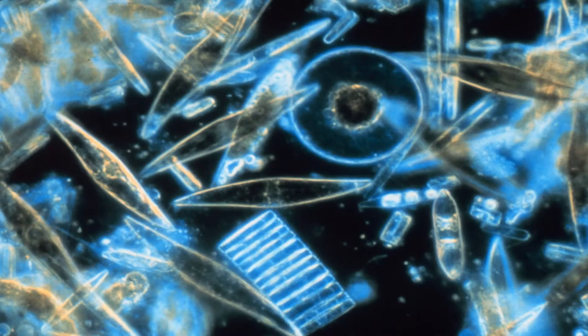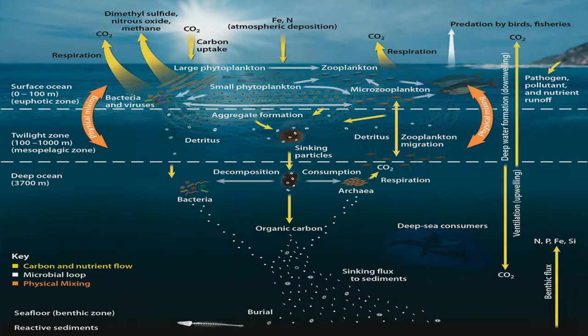In fact, shell-forming organisms at this point start to deform, slowly dissolve, and eventually die. When we consider the marine biosphere, we see several critical problems on the horizon. If plankton goes, practically all fish will be gone, cascading from sardines all the way up to whales.